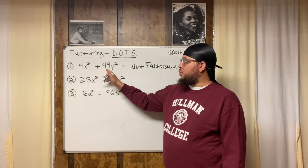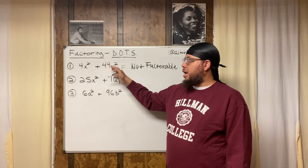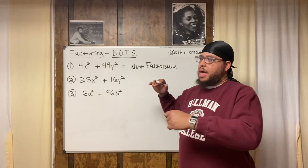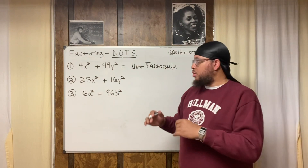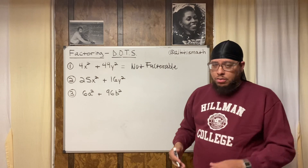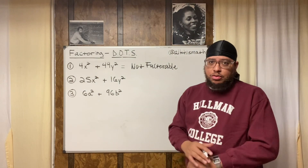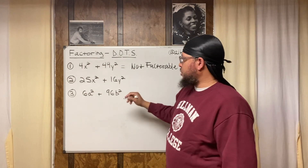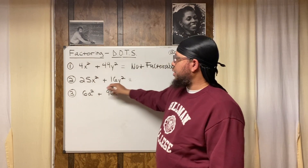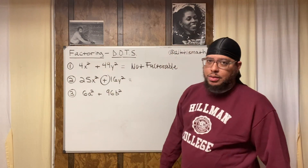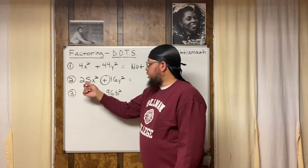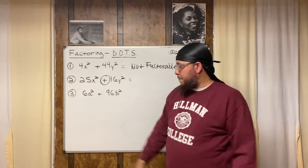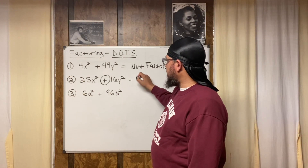In the real number system, this is not factorable. We could factor it using the complex number system by treating the square root of 49y-squared as 7iy, but that's a more advanced level. If we're strictly dealing with real numbers, this is not factorable. Same thing with number two — perfect square, perfect square, two terms, but there's a plus sign and the GCF is one. So this is also not factorable.